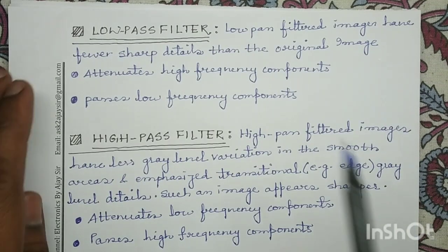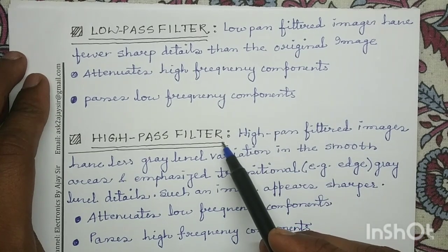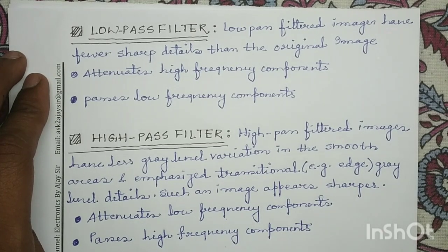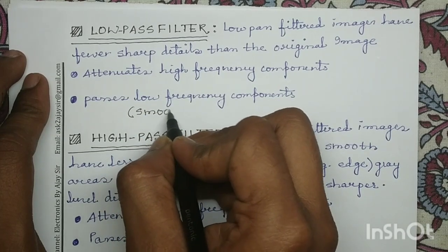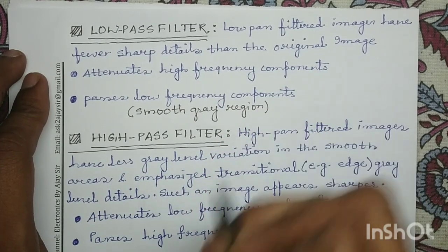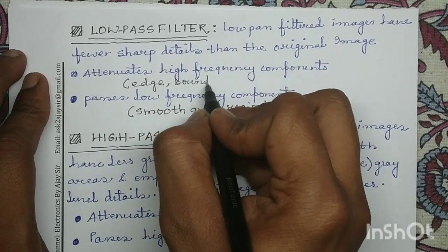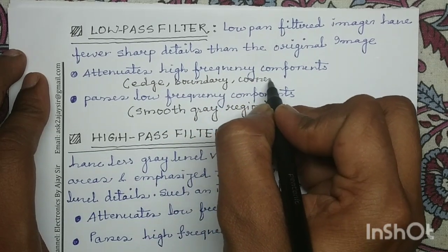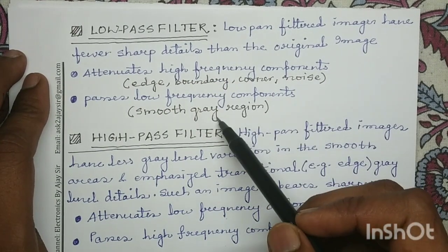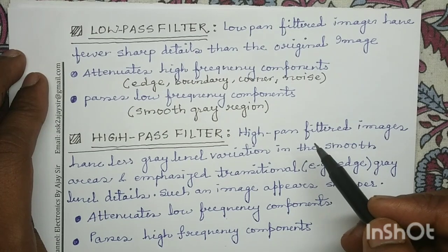From the name it is clear that a low pass filter passes low frequency components and attenuates high frequency components, whereas a high pass filter passes high frequency components and attenuates low frequency components. In a digital image, smooth gray regions are examples of low frequency components, whereas edges, boundaries, corners, and noise are examples of high frequency components. Therefore, a low pass filter can be used for removal of noise.